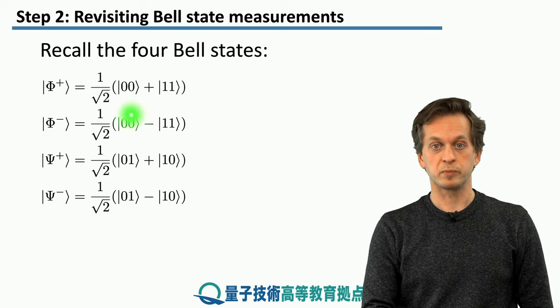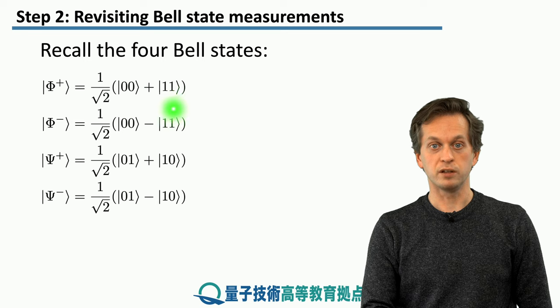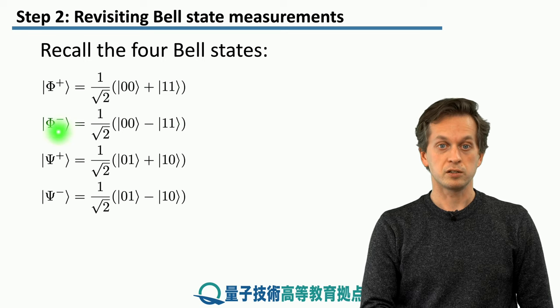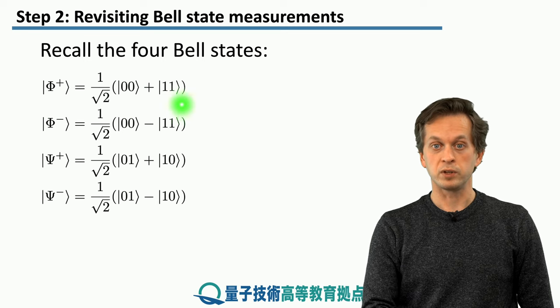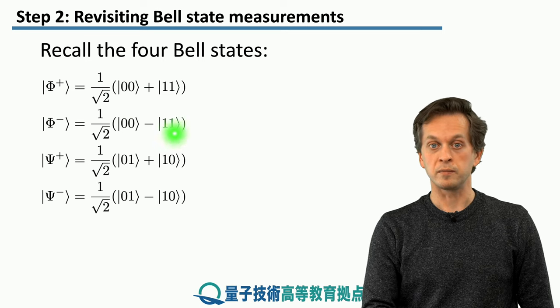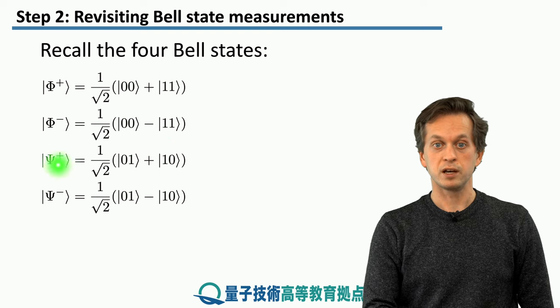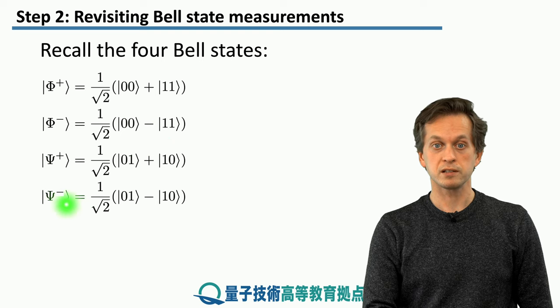Phi plus is a superposition of |00⟩ and |11⟩. So is Phi minus, but with a negative phase between the two. And this is the expression for Psi plus and Psi minus.